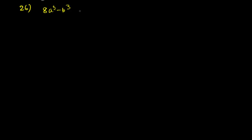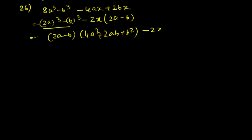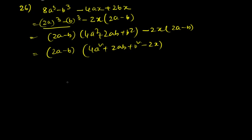Question 26: 8a³ – b³ – 4ax + 2bx. Factorising the cubes: (2a – b)(4a² + 2ab + b²), then taking 2x common from the remaining terms gives –2x(2a – b). So the answer is (2a – b)(4a² + 2ab + b² – 2x).